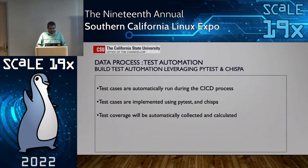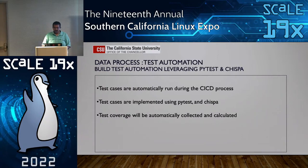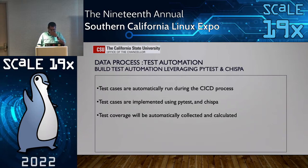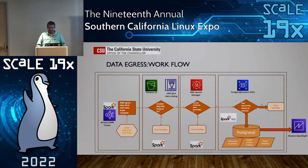For testing, today we use PyTest and Chispa. PyTest is a testing framework for Python. When it comes to testing PySpark there's no good framework out there, so we found this open source framework called Chispa that does a pretty decent job of testing PySpark code — we use that in combination with PyTest. The test coverage is automatically collected and calculated, and because we've put a threshold in place, if it doesn't meet that threshold it doesn't get pushed.